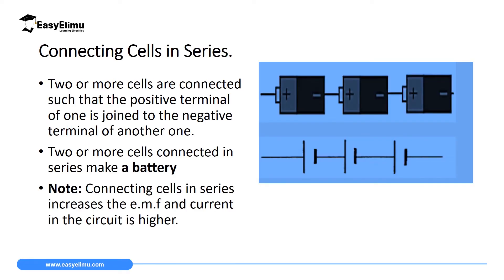So we are going to begin with the cells connected in series. For you to connect cells in series, you have to connect the positive terminal of one cell to the negative terminal of the other cell. Like in diagram one, you can see the positive terminal of cell one is connected to the negative terminal of cell two.